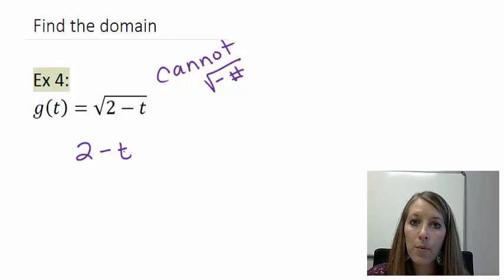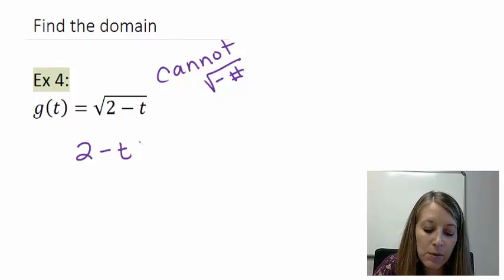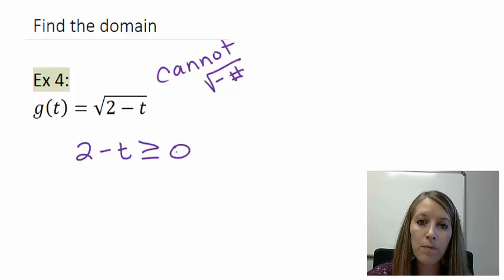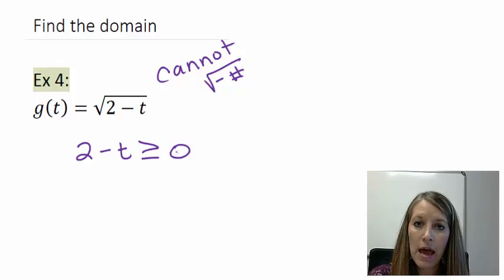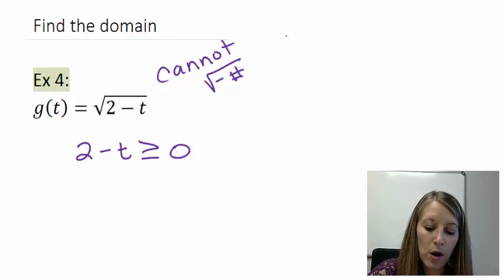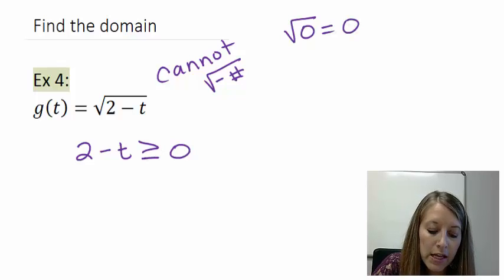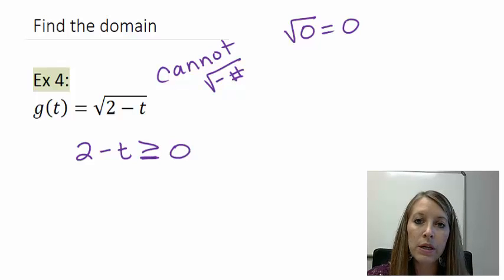The way that we represent positive is it has to be larger than or equal to zero. Because, of course, if anything is bigger than zero, it is a positive number. Now zero is okay. We can take the square root of zero. It just simplifies to be zero. So that is why it is okay to include the or equal to bar.